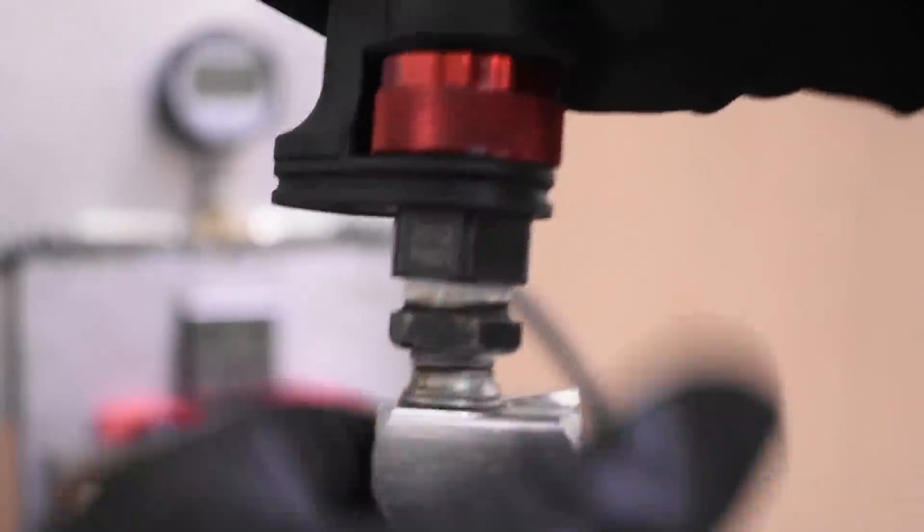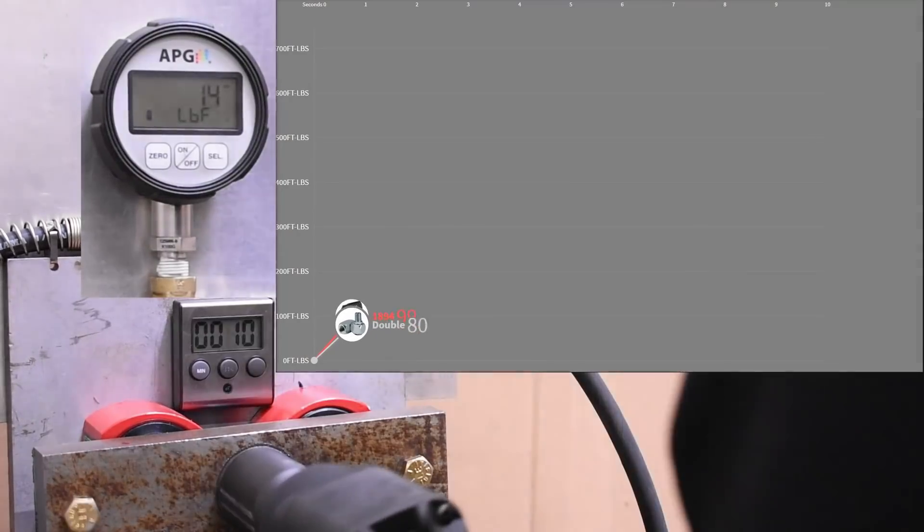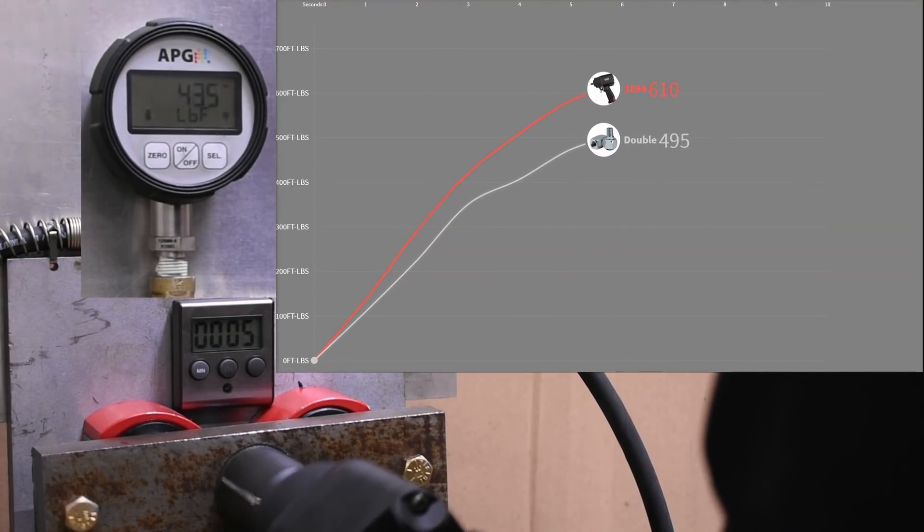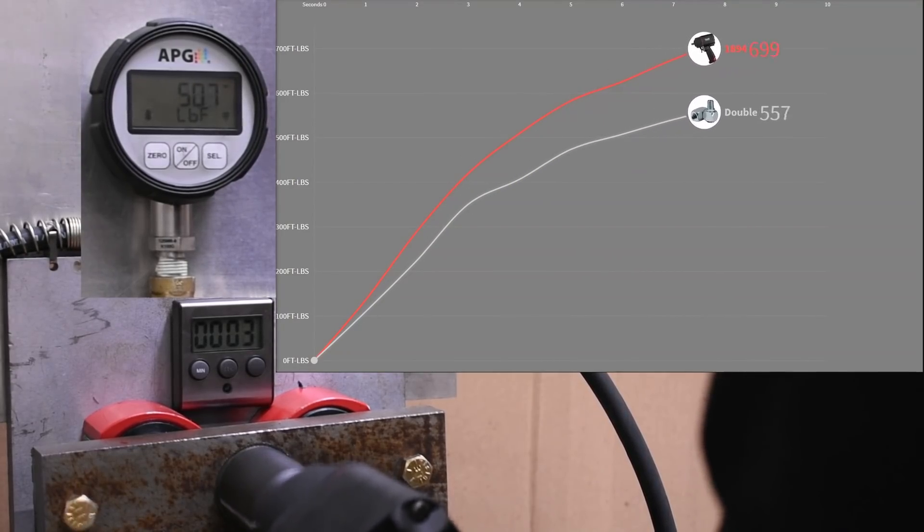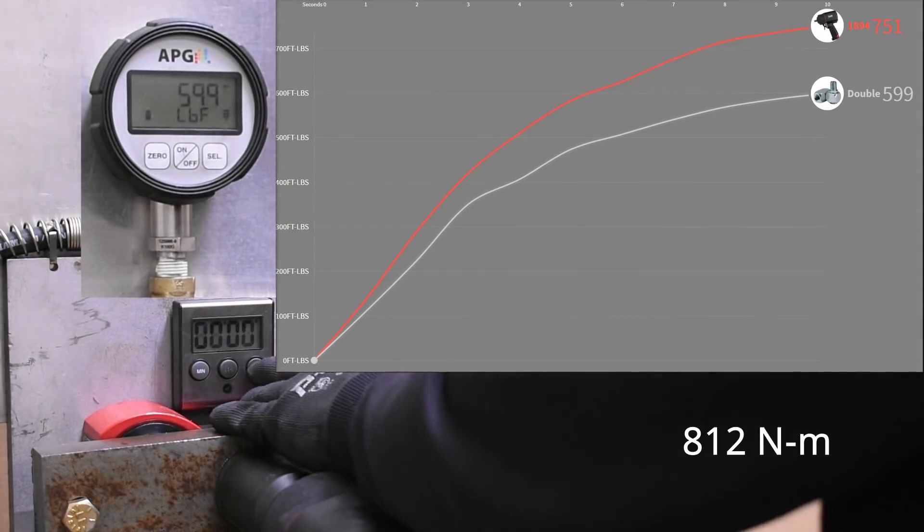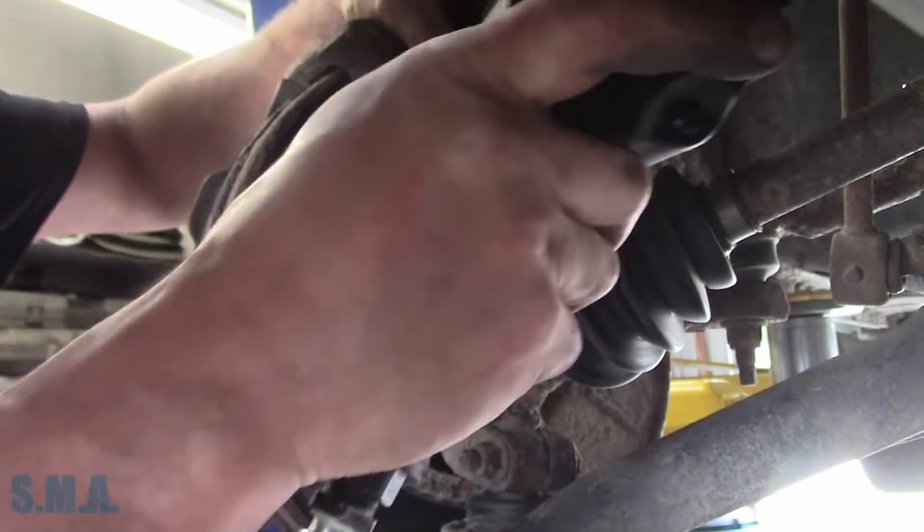Here's the double swivel. 599. Yeesh. A 152 foot-pound loss or just over 20 percent.